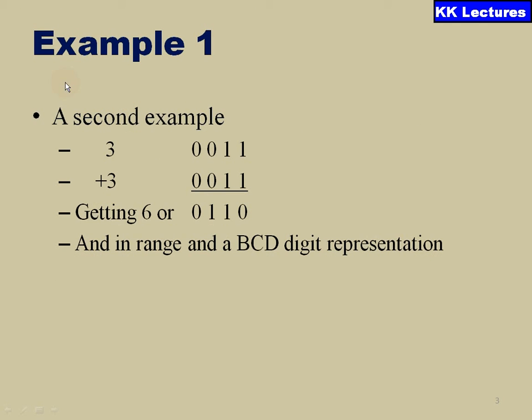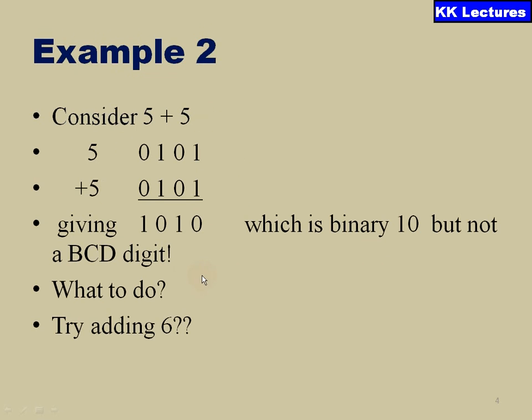Now let us take an example, the second example. 3 plus 3, we know that 3 plus 3 is always 6. Here 3 equivalent number in BCD is 0011 and again 0011. When I add, I am getting the result as 6, in the range of BCD digit representation, that is below 9 itself.